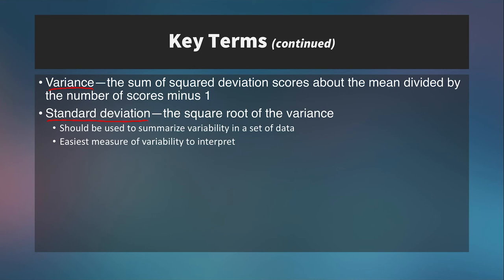And this is the most frequently used indice of variability. It should be used to summarize variability in a data set. And it's the easiest measure of variability to interpret. Okay, so let's take a look at how to calculate variance as well as standard deviation.